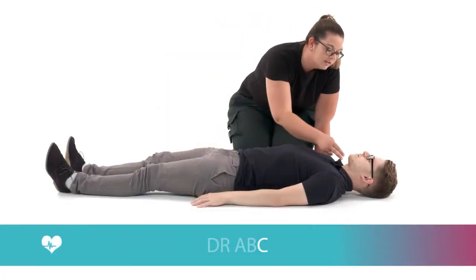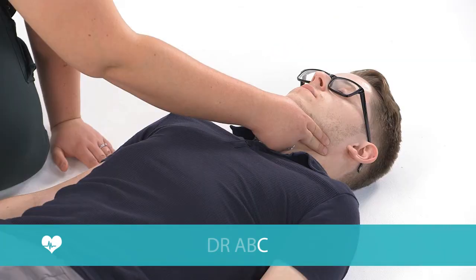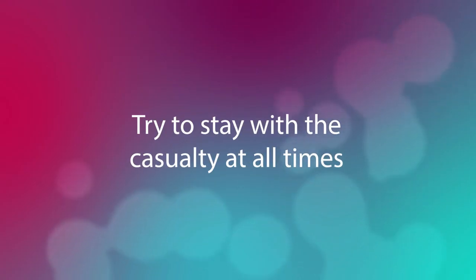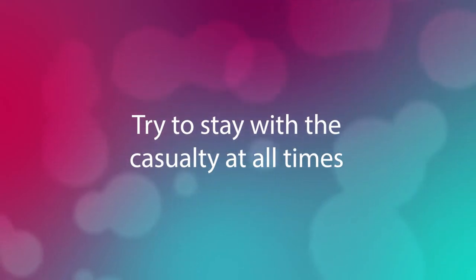Circulation. Now's the time to contact the emergency services if you haven't already, and if it's needed, get the casualty's blood circulating. Ask somebody to call 999 for you while you get somebody else to fetch an automated external defibrillator, or AED. If you're by yourself and it's possible, try to stay with the casualty at all times. Leave to call the emergency services if you absolutely need to, but don't go searching for an AED if one isn't nearby. The ambulance will bring one with them.